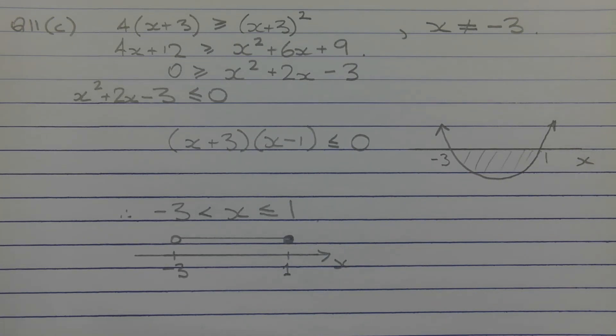inequality by multiplying both sides by the square of the denominator. That is, we're multiplying left-hand side and right-hand side by (x plus 3) squared. After cancellation, we get 4(x plus 3)